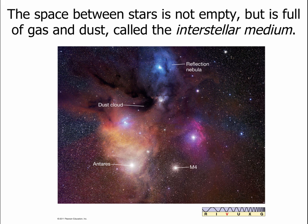The beginning of our tale begins with something called the interstellar medium. "Inter" means between, "stellar" means star, and a medium is just material. So this is material — mostly gas and dust — that is located between stars. You may say space is empty. Well, it's mostly empty and a very good vacuum, but it's not completely empty. Here's a picture of the area around the star Antares in the constellation Scorpius, and you can see there are several different types of clouds and nebulae around.